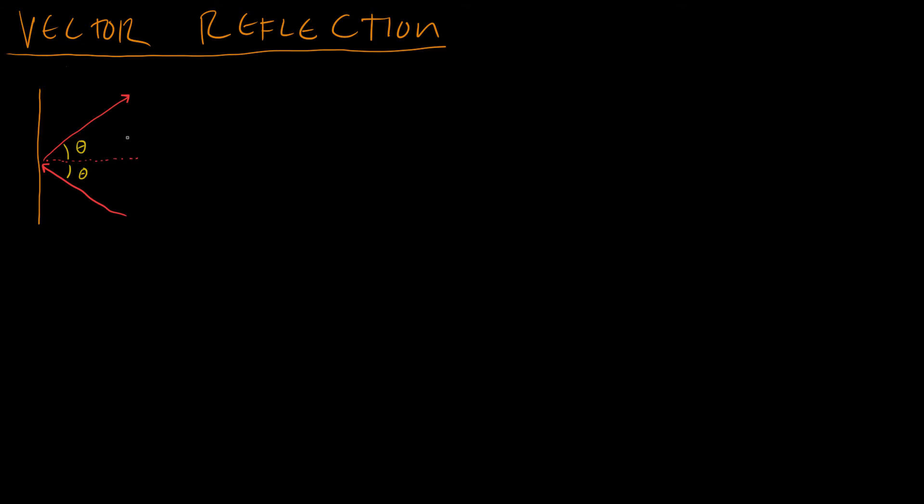Or this happens a lot in physics simulation. If you have an object striking a wall with a perfectly elastic collision, for example, a very bouncy ball hitting a wall, then you would get a collision like this. You have to do this kind of calculation. So this comes up a lot in video games.